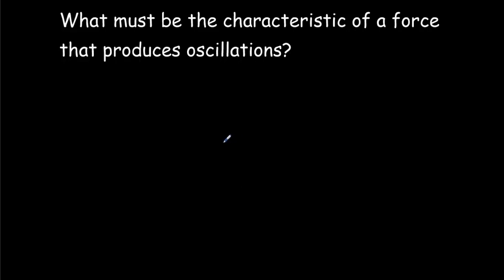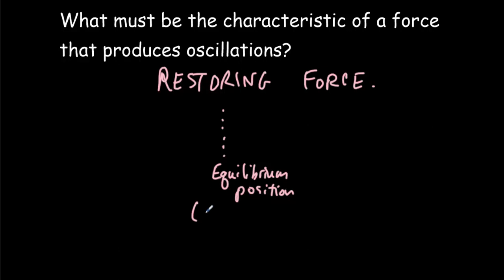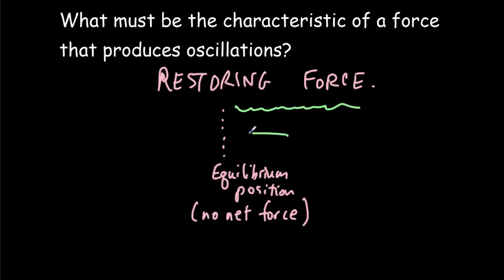We say that we have to have a restoring force. What's meant by a restoring force? Well, it simply means that there's got to be an equilibrium position, and that's a place — or could actually be a region — where there's no net force. Our force will always have to be such that if the object is on this side of equilibrium, the force will be back towards equilibrium. If the object is on this side of equilibrium, the force is going to be back towards equilibrium.